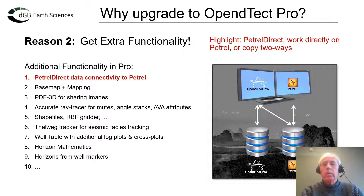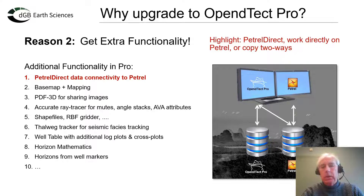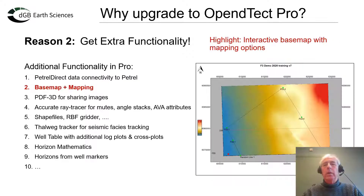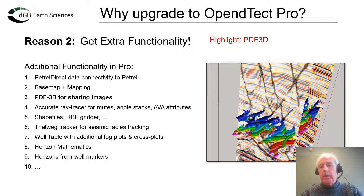The second reason to upgrade is that we offer a lot of extra functionality in OpenDetect Pro. It is essentially the extended version of OpenDetect, and one of the highlights is a PetRail direct connection. This gives you the capability of either working natively on a PetRail data store, or copying the data across, working in OpenDetect Pro, and pushing the data you have created back into the PetRail project. Another highlight is an interactive base map with mapping options.